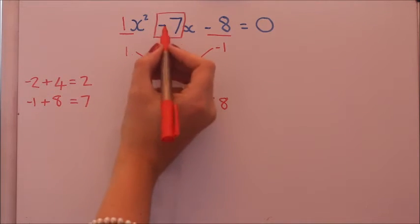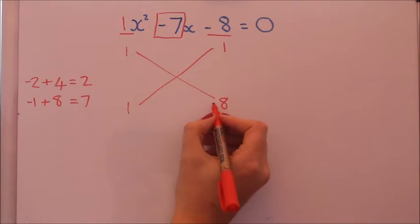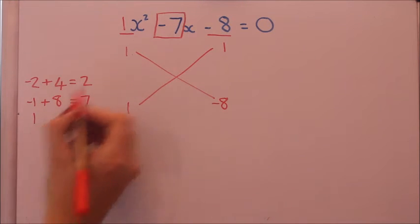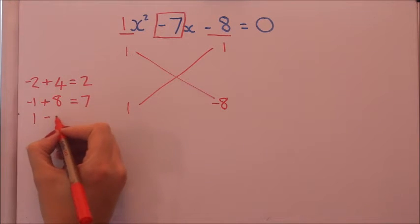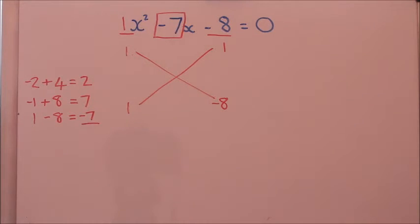Now that's the right number, but the sign's wrong, so we will change the sign and put the minus on the eight. Now let's try that. One times one is one, one times minus eight is minus eight. Add them together and we should get minus seven, so that works.